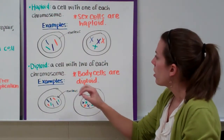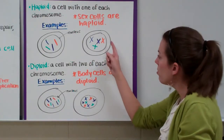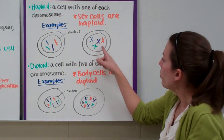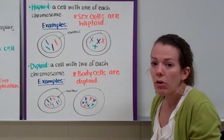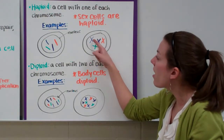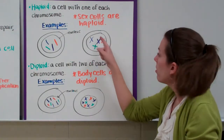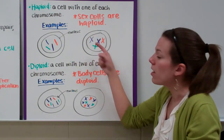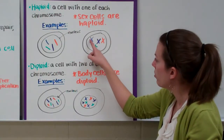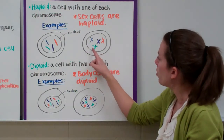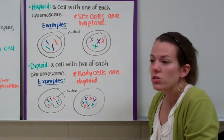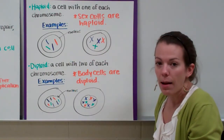Now let's take a look at this second cell. We have a nucleus with a blue, purple, orange, and green chromosome. If the chromosomes are hooked together — they look like X's but they're not separated — it still only counts as one chromosome. So we have one blue chromosome, one green, one purple, and one blue. So this cell is also haploid.